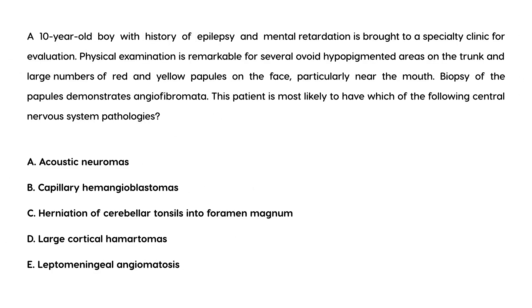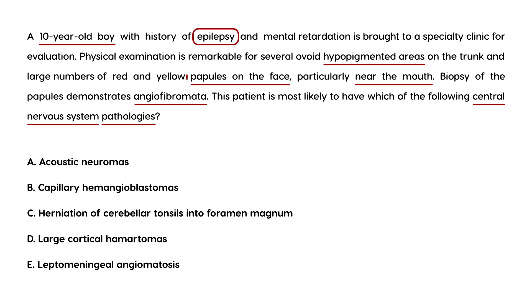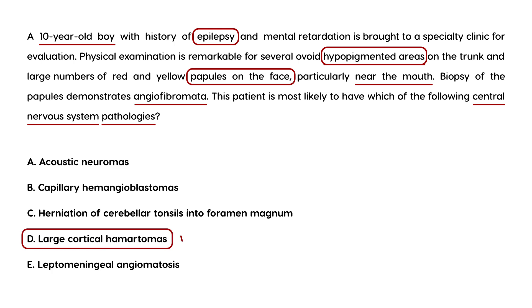Vignette 1: A 10-year-old boy with a history of epilepsy and mental retardation is brought to a specialty clinic. Physical exam shows several ovoid hypopigmented areas on the trunk and large numbers of red and yellow papules on the face, particularly around the mouth. Biopsy of the papules demonstrates angiofibromata. This patient is most likely to have which CNS pathology? He has epilepsy, facial papules, and hypopigmented areas. Tuberous sclerosis involves tumors called hamartomas — that is the answer.